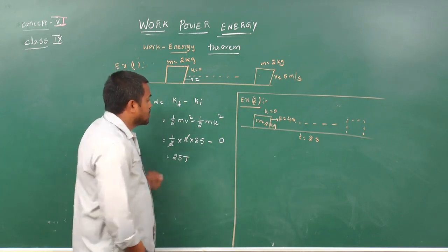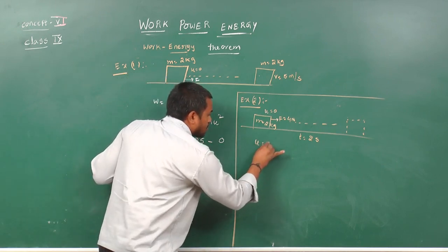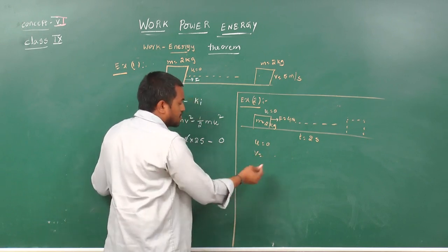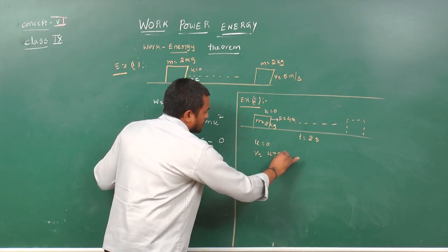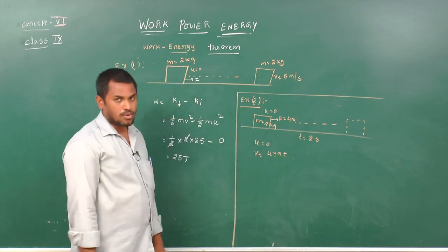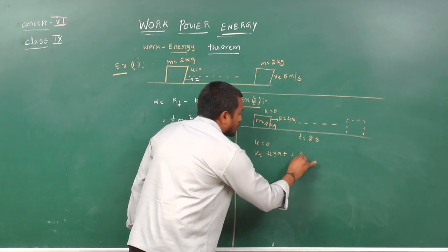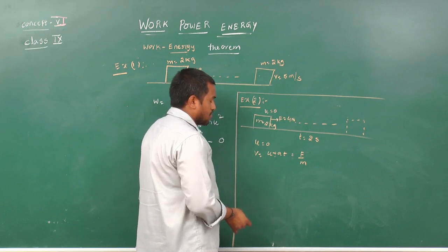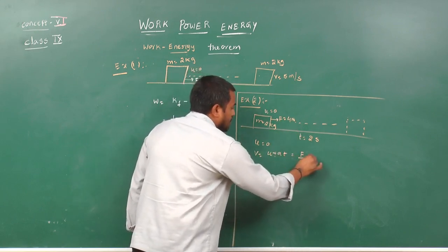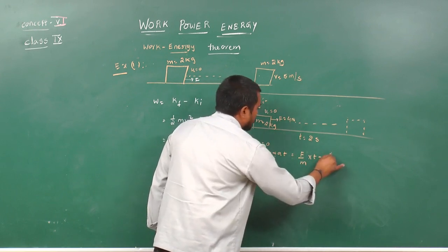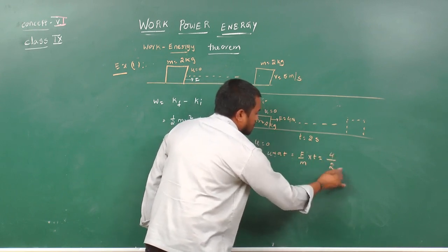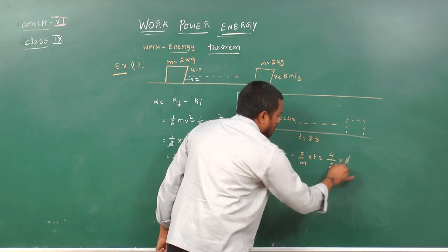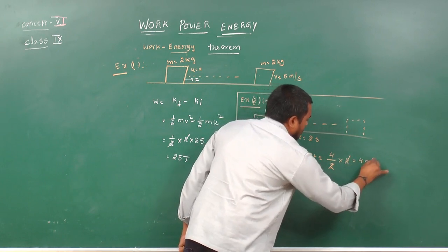To find work done by this force, we need to find the final velocity. Initial velocity is 0. According to the first equation of motion, v equals u plus at. Acceleration, according to Newton's second law, equals F divided by m. So v equals 0 plus (F/m) times t, which equals (4 Newtons / 2 kg) times 2 seconds. The 2s cancel, giving a final velocity of 4 meters per second.